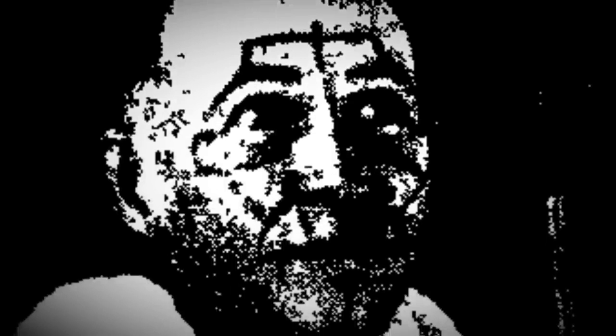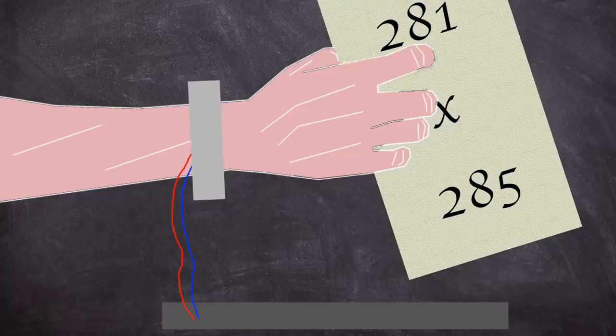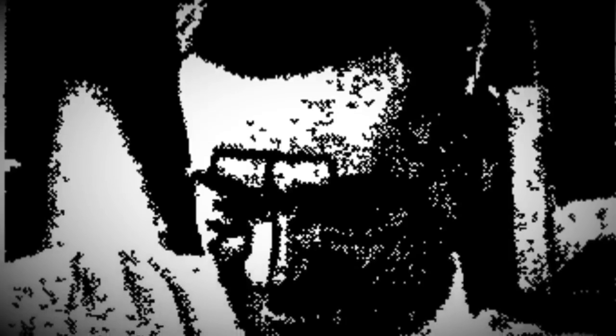Clearly Landis found electric shocks to be pretty handy in psychological experimentation as he managed to wrangle it in again. The subjects arm was connected to an armband and a stethoscope. Both of these were attached to an inductorium. The subject was given a card which had two numbers printed on it and told to multiply these mentally while they received electrical distraction. The electric shocks were increased and decreased in order to wear the subject down. Landis would later write, This situation, following the long grind of the other situations, brought about a very real disturbance. The electric shocks continued either in Landis' own words, some very real emotional expression was given or it was apparent that the subject would not give away any marked expression. Which makes you wonder how long this would have gone on for. Only one person was actually able to correctly answer the multiplication question.